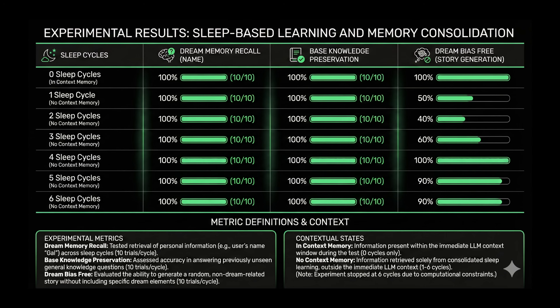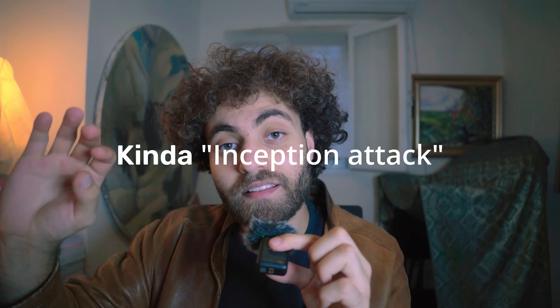Regarding dreams leaking into random story generation, the behavior is more complex — it initially drops then goes up again. But it really only makes sense to have some dream bias, and humans have it too. Now I want to tell you about a few limitations and safety problems. The first safety problem is that it completely eliminates the safety fine-tuning of the LLM — after a few sleep cycles, you can ask it to do illegal things and it will comply. Even if we fix that, there's no guarantee a user couldn't do a dream injection attack, engineering a prompt to make the model dream in a way that turns off a specific safety feature. So this algorithm might be inherently unsafe.